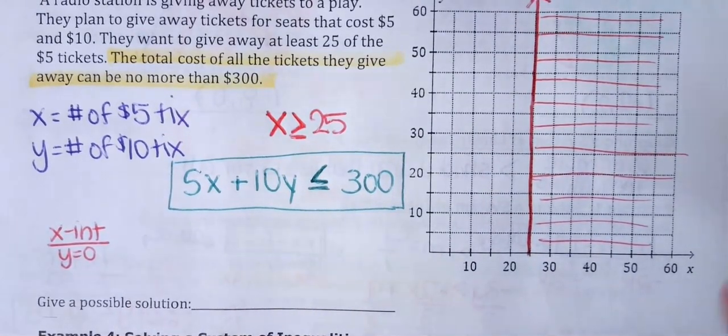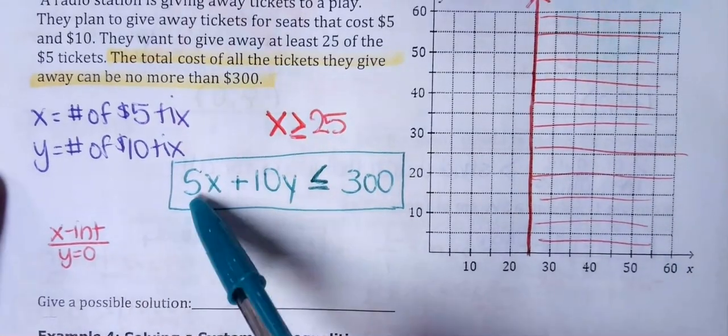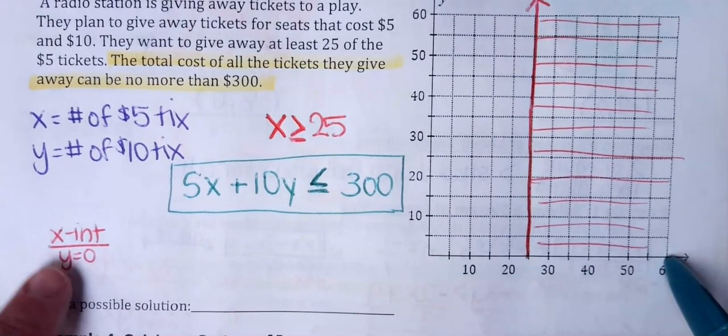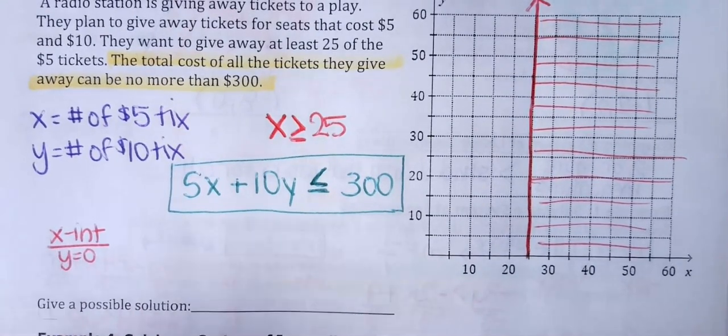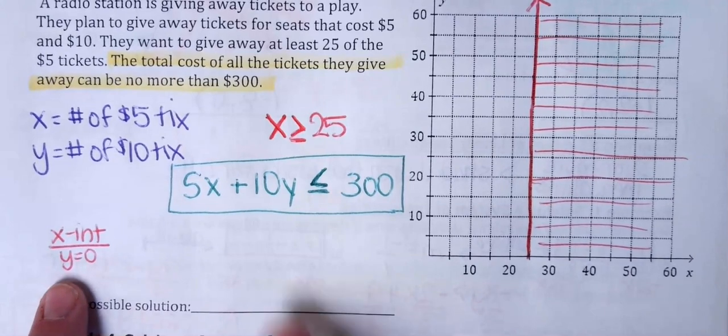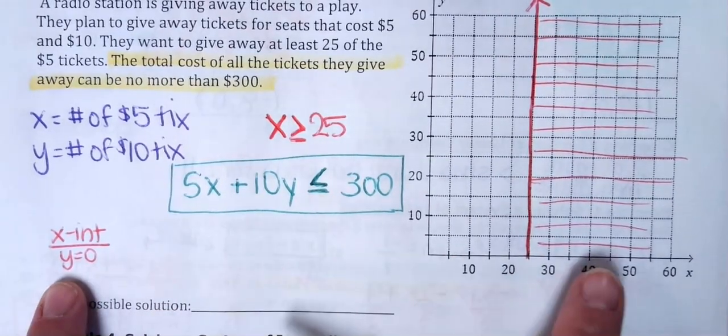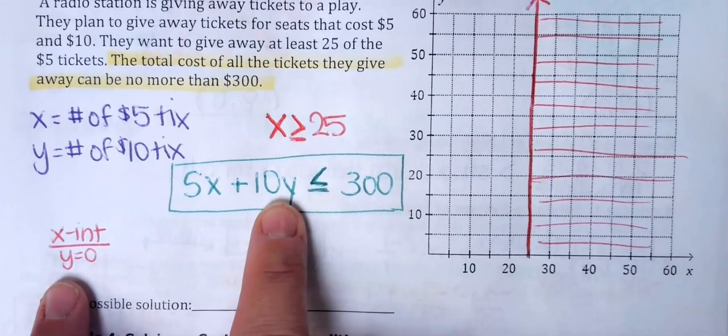So if you want to figure out where a graph intersects the x-axis, everywhere across here the y has to be 0. So what you can just do, just real quick, if I plug in 0 for y, I can solve that to figure out the x-coordinate of the intercept. So if I plug in 0 for y here,